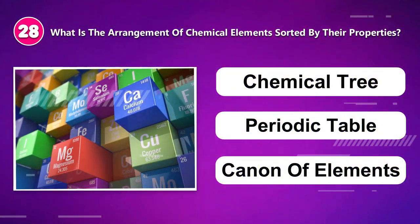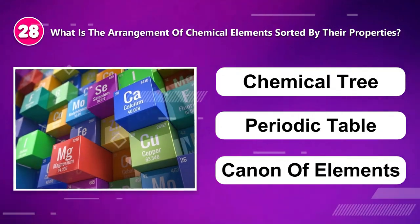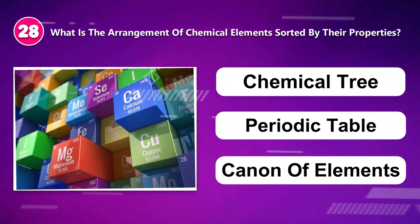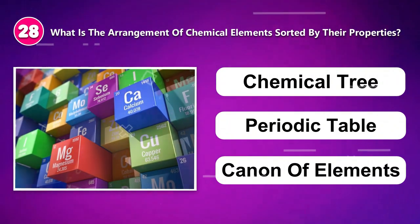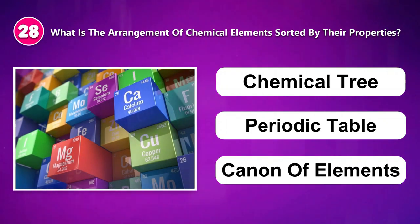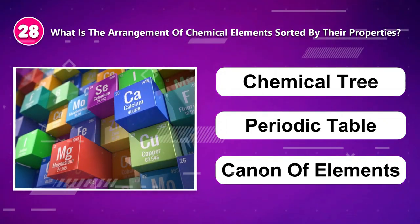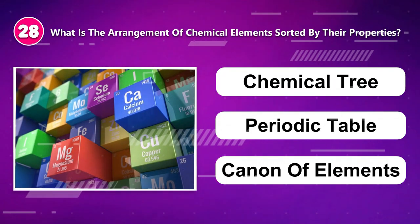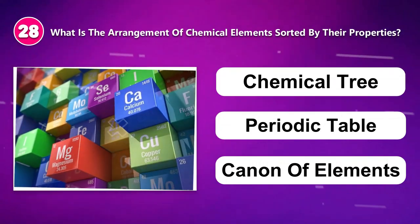Number twenty-eight: What is the arrangement of chemical elements sorted by their properties called? Chemical tree, periodic table, or canon of elements.